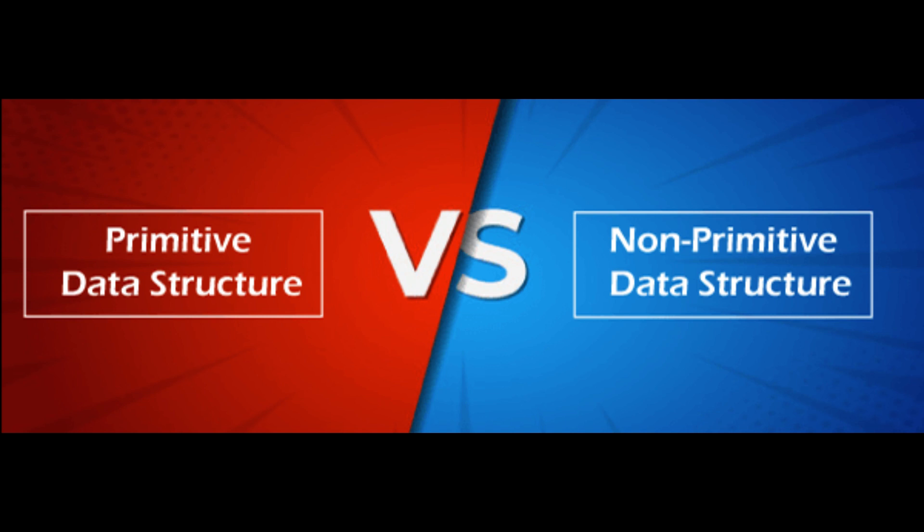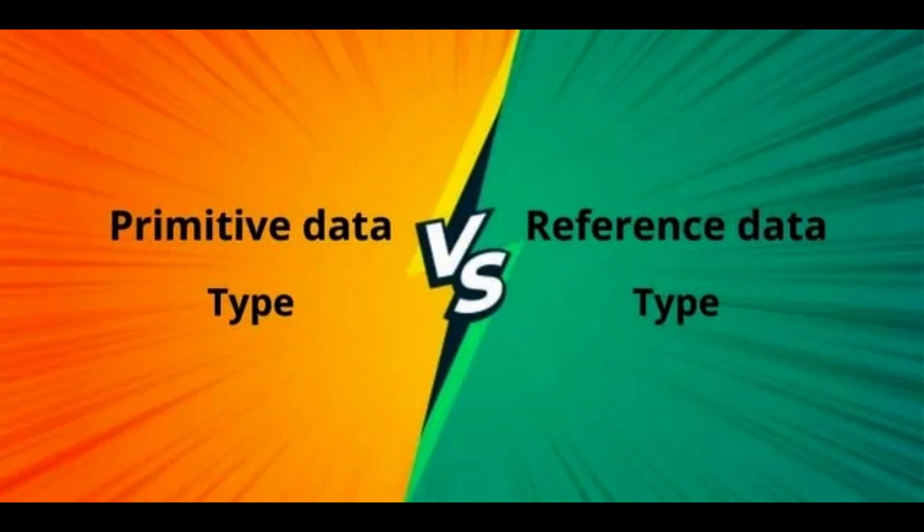Storage: non-primitive data types store a reference — a memory address — to the actual data, rather than the data itself. They are dynamically sized, allowing them to hold varying amounts of data.